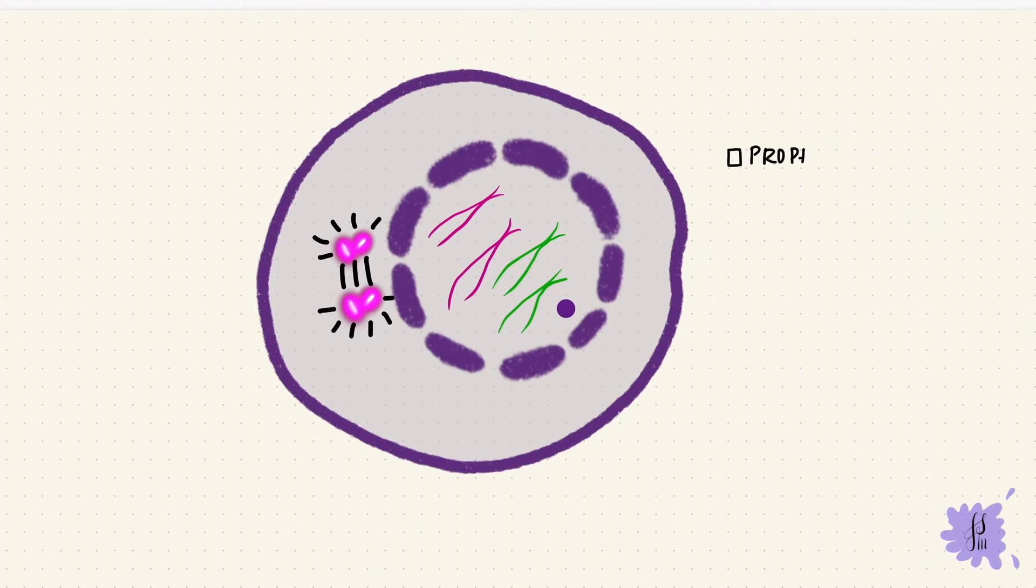Mitosis has four stages: prophase, metaphase, anaphase, and telophase. There's a fifth stage, that's late prophase or prometaphase, between prophase and metaphase.